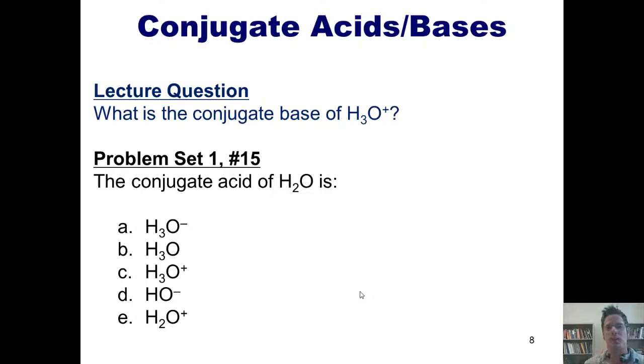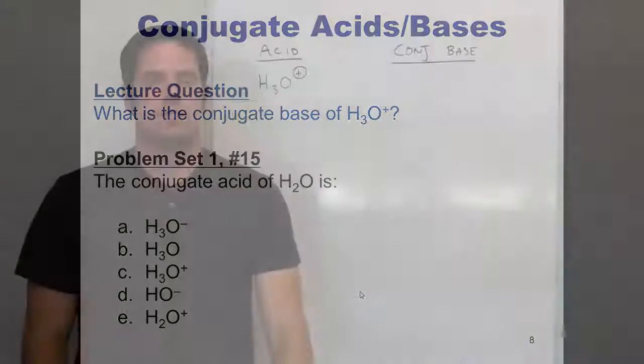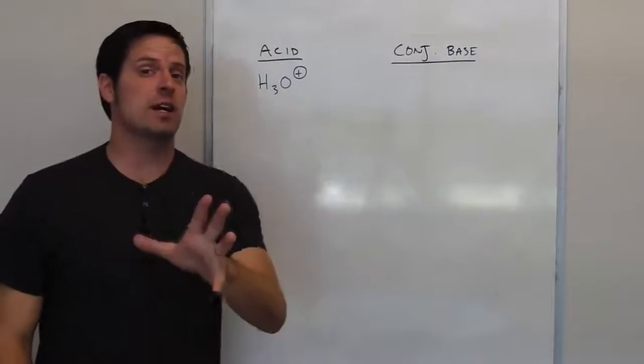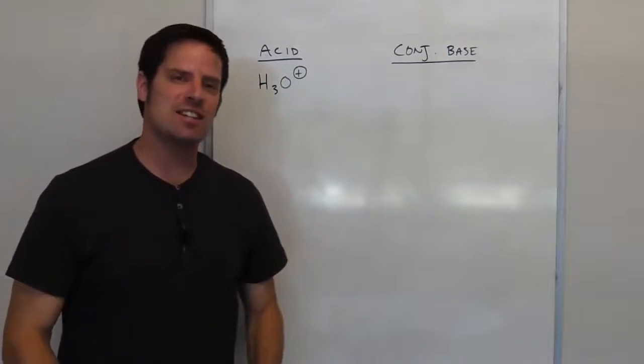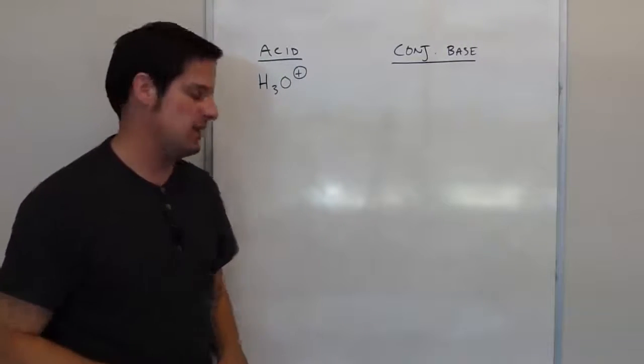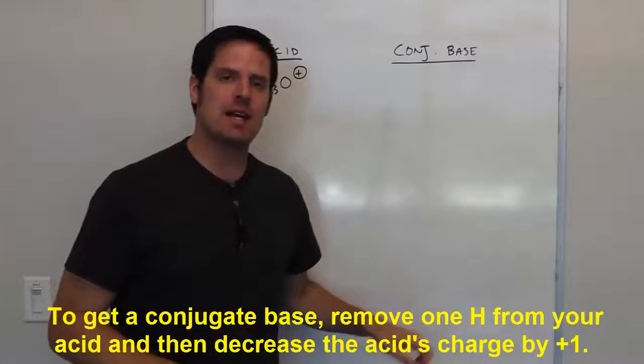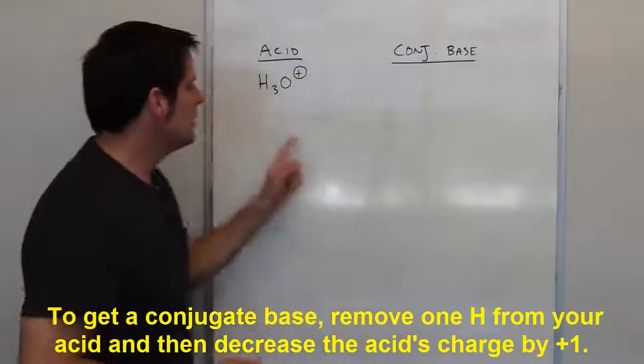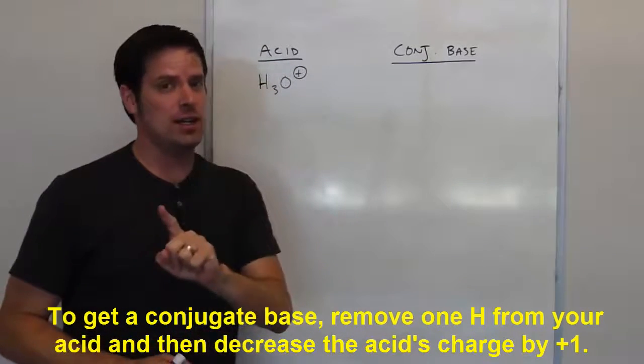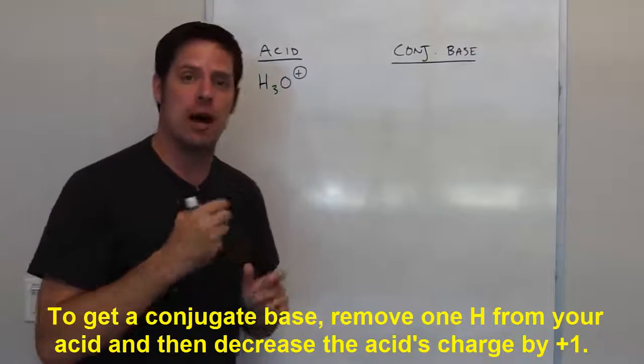Now, in order to properly address these two questions, I'm going to actually show some footage from the doc cam. This first question gives us H3O+, hydronium, as an acid, and asks us to determine the conjugate base. In order to determine a conjugate base, all you do is take your acid, you remove one hydrogen, and you decrease the charge by one.